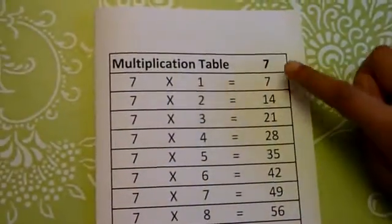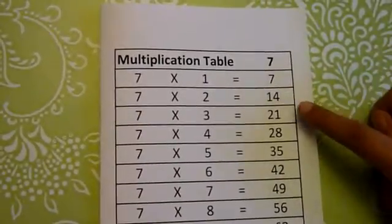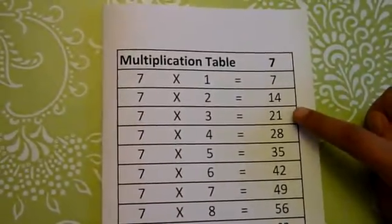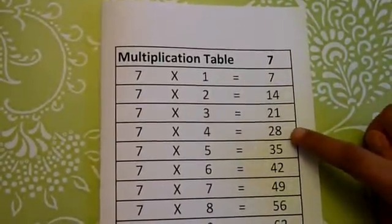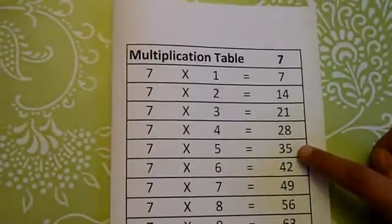7 1s are 7, 7 2s are 14, 7 3s are 21, 7 4s are 28, 7 5s are 35,